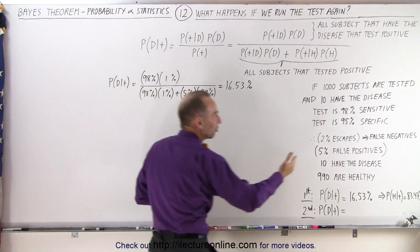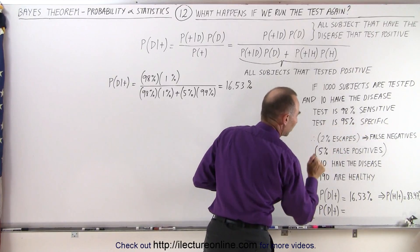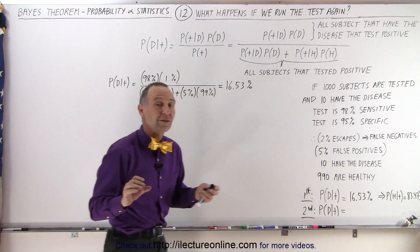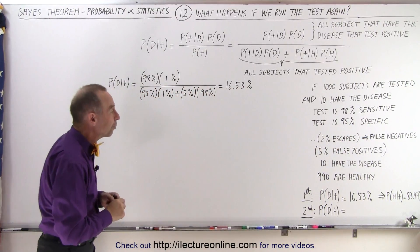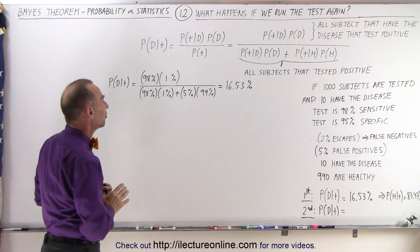The 5% doesn't change because if you have a test that is 95% specific, that means there's a 5% probability of false positives. So that all stays the same.